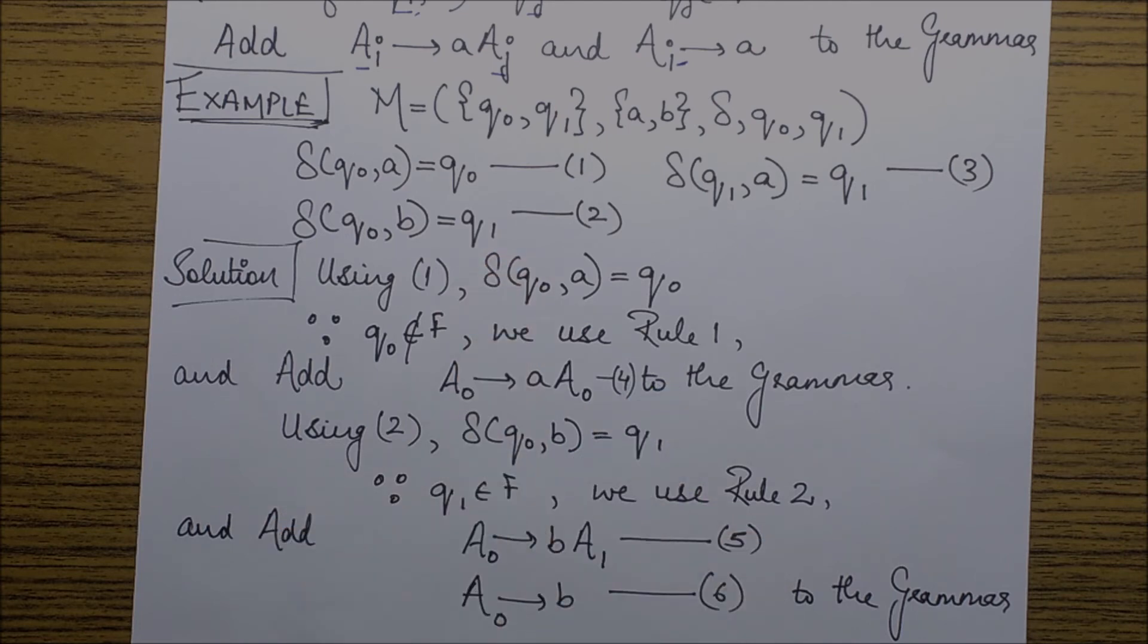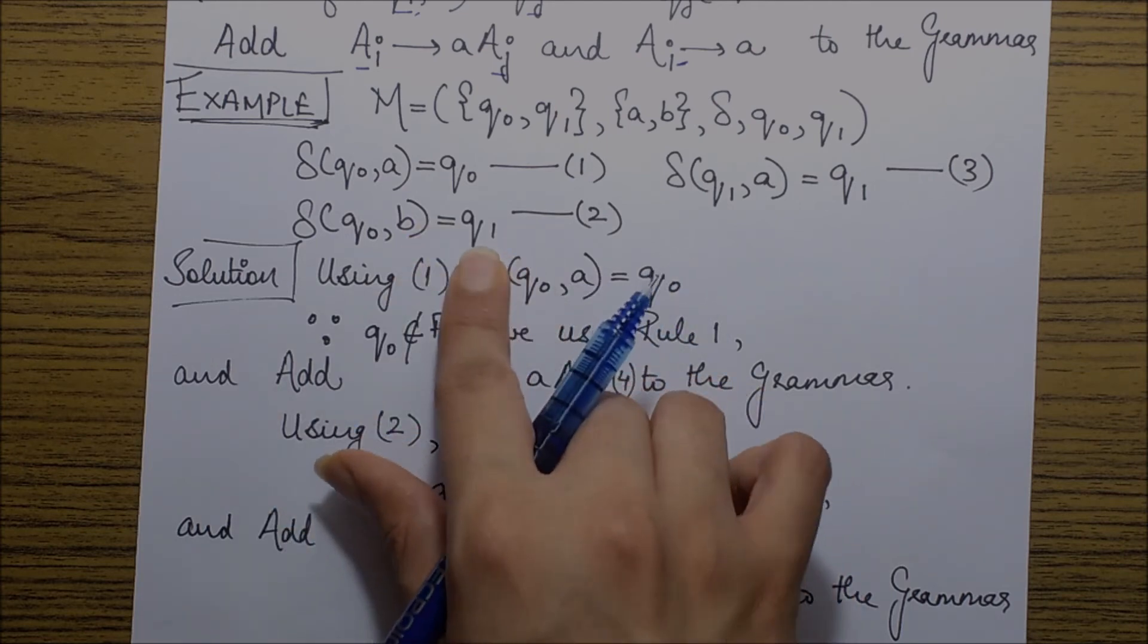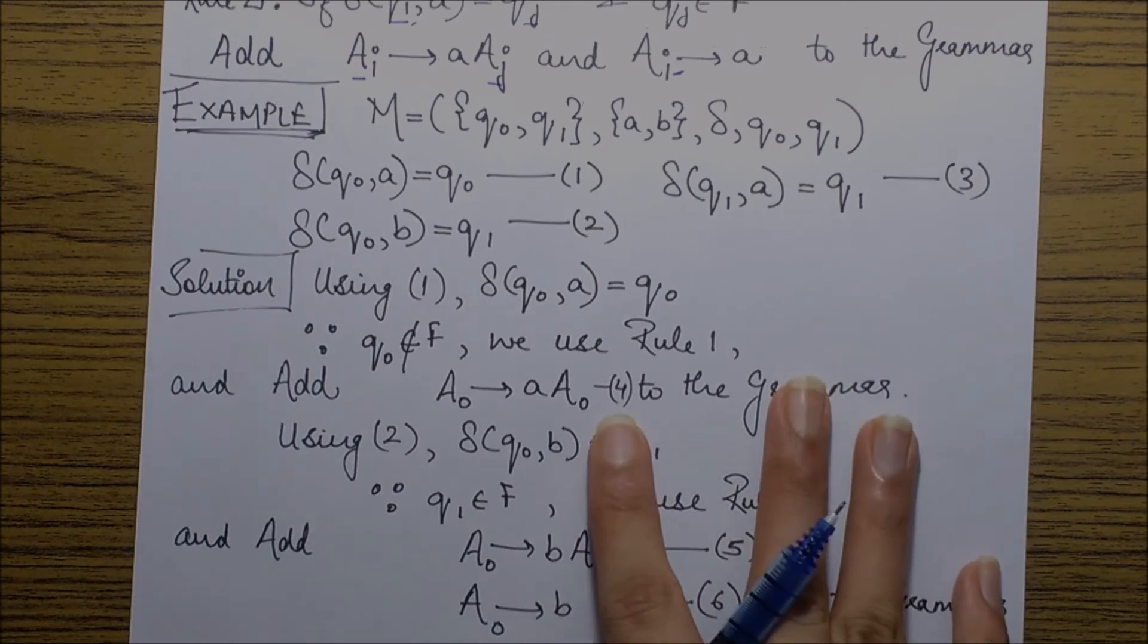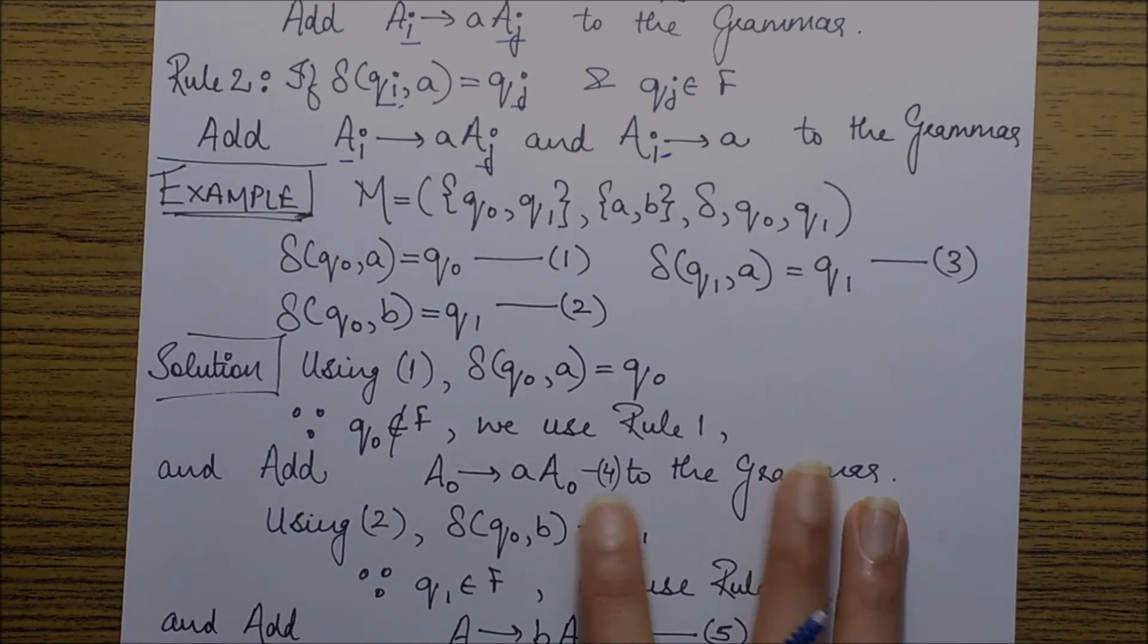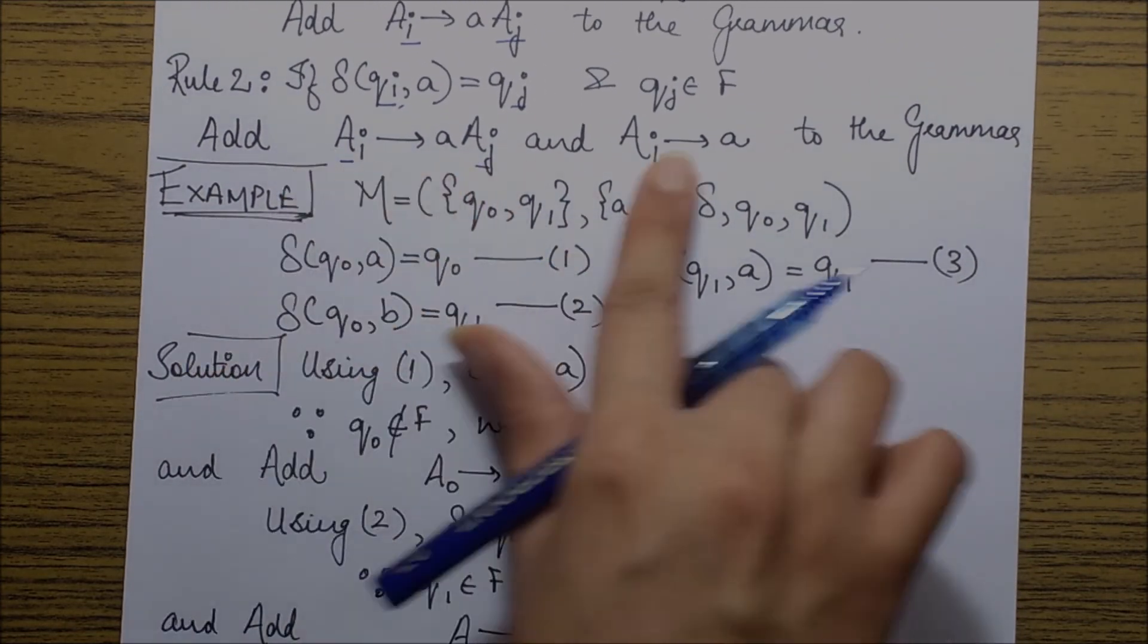So for this, since we know that q1 is a final state, we'll be using rule 2, which says that we need to add these two productions.